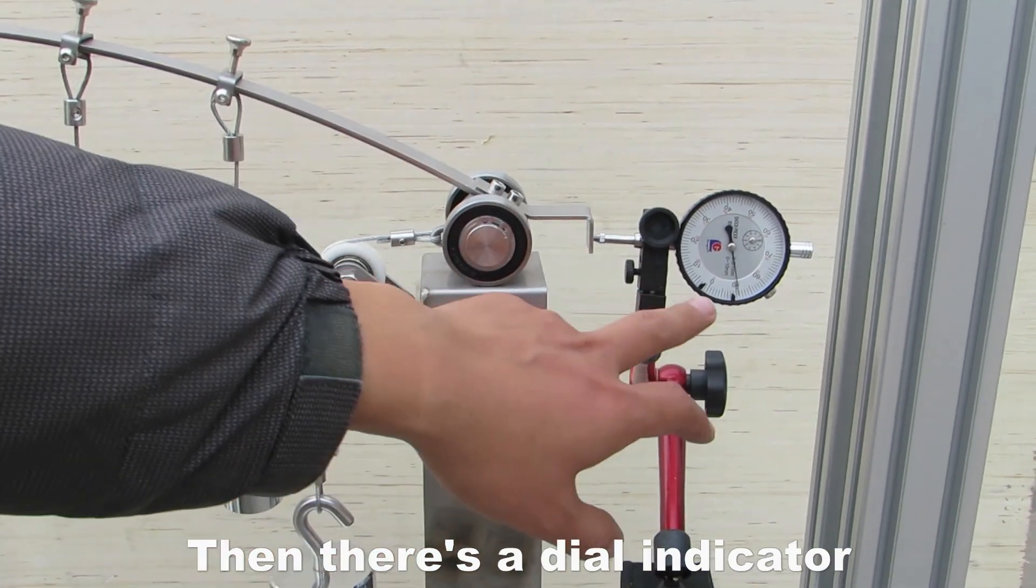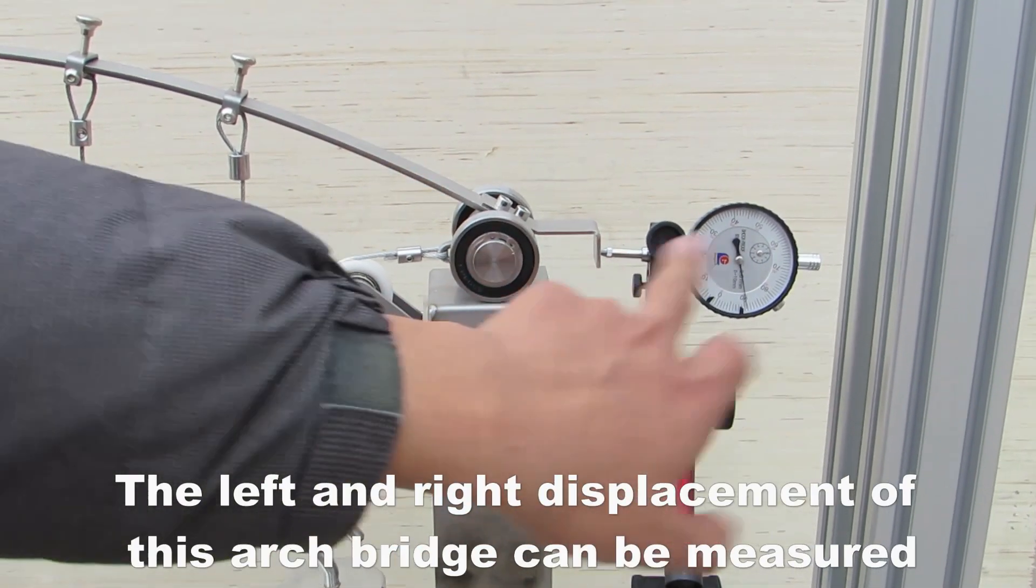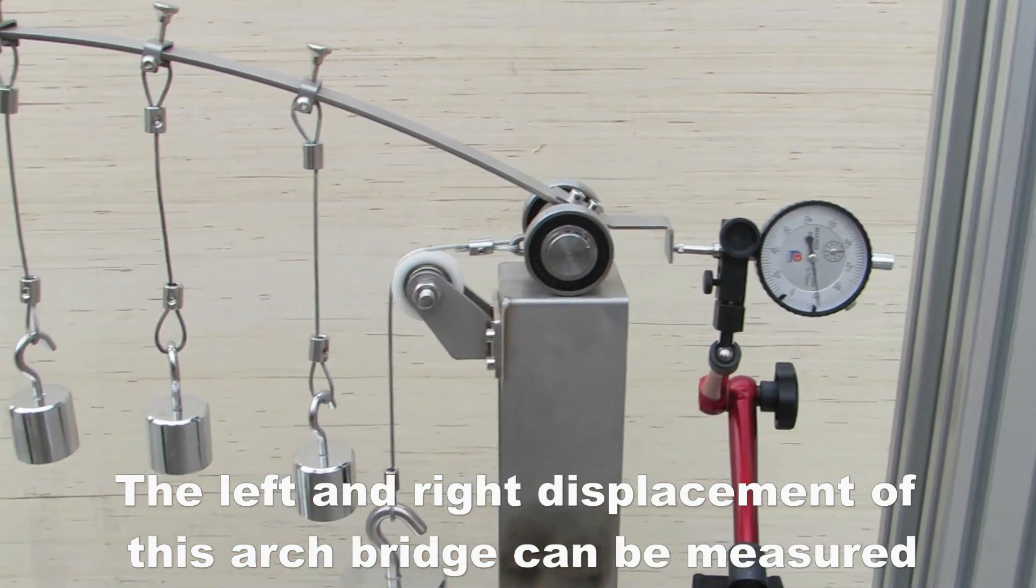Then there's a dial indicator. The left and right displacement of this arch bridge can be measured.